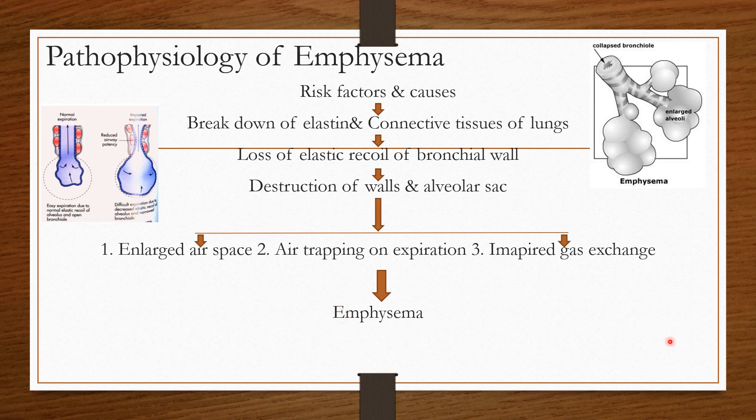This is the pathophysiology. Don't confuse it. In chronic bronchitis, the bronchioles constrict. In emphysema, the alveolar space is affected.